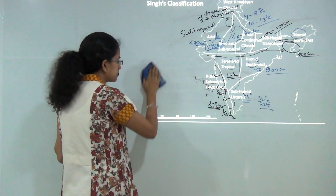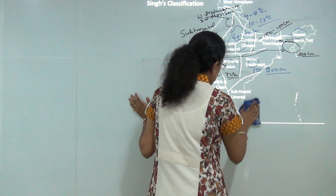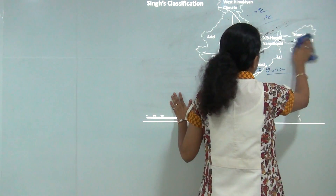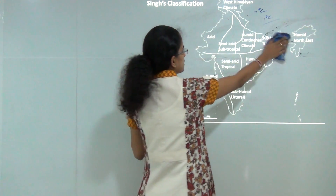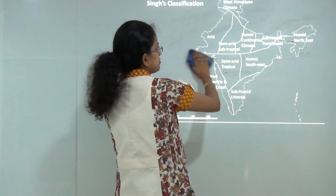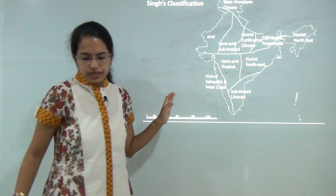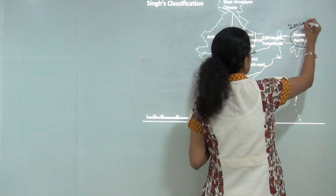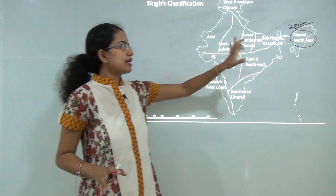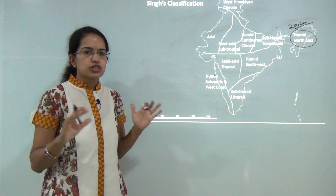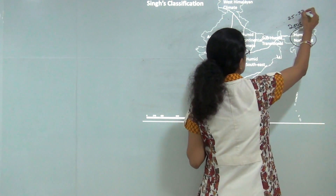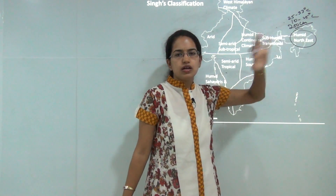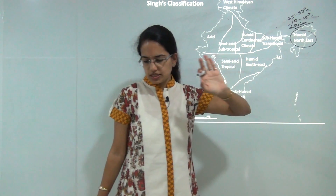The final classification was given by R.L. Singh, a well-known Indian geographer. In 1971, he classified India into various regions based on both qualitative and quantitative terms. Starting from the eastern side: the humid northeast has rainfall more than 200 centimeters, summer temperature around 25 to 33 degrees Celsius, and winter temperature around 10 to 25 degrees Celsius, covering most of the northeastern states.